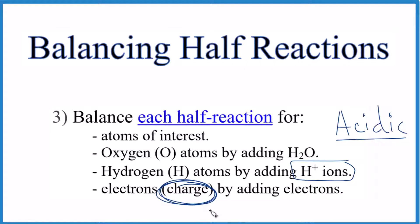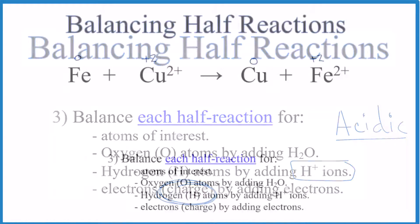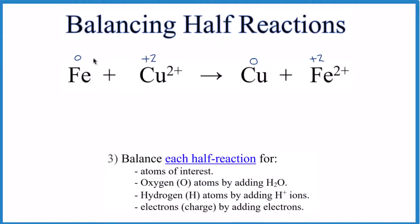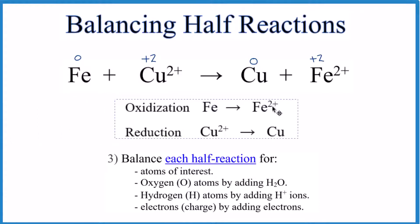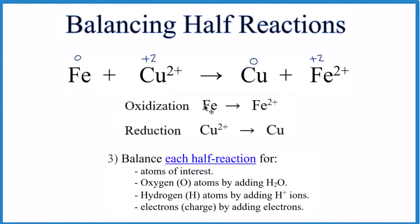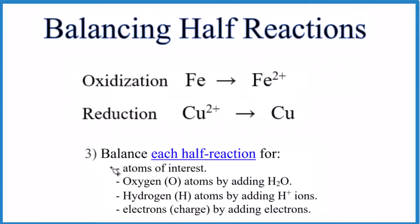Let's balance the half reactions for a simple redox equation. Here's the original equation with oxidation numbers written in — in this case they're the same as the ionic charge. Here are the half reactions: iron is oxidized (the number gets bigger) and copper is reduced (it goes from two to zero). The first step is to balance the atoms of interest. We have one iron on each side and one copper on each side — they're already balanced. Now we do the oxygen atoms, but there aren't any, so don't worry about it. Hydrogen? None either.